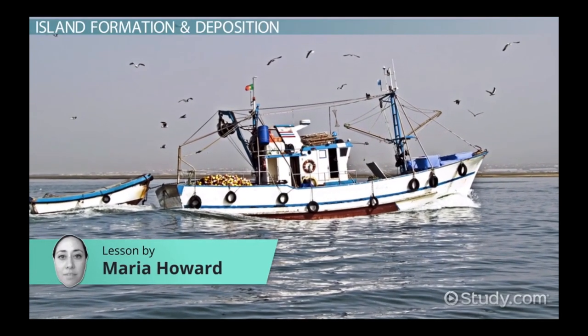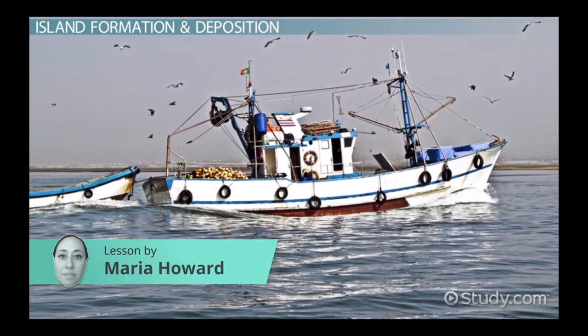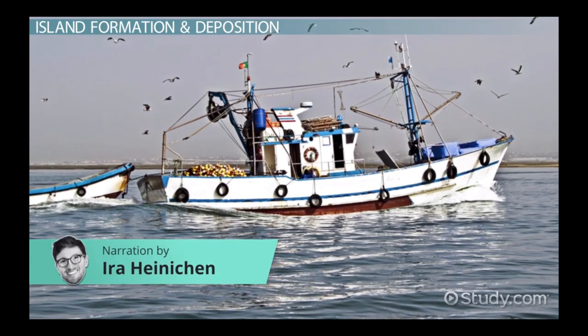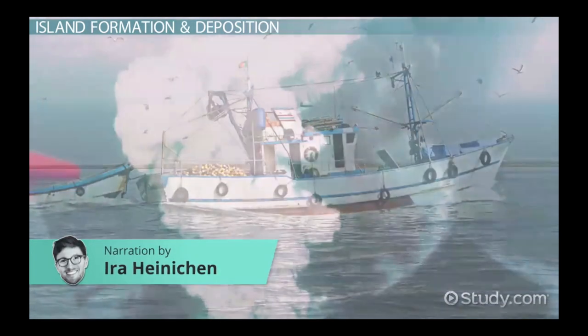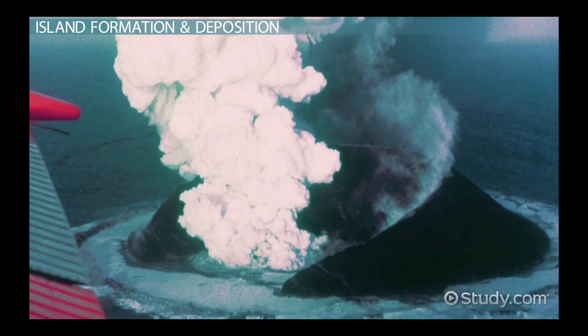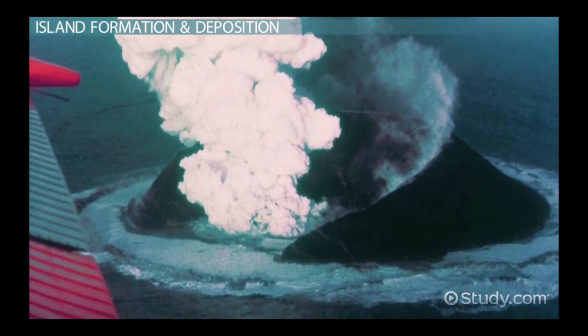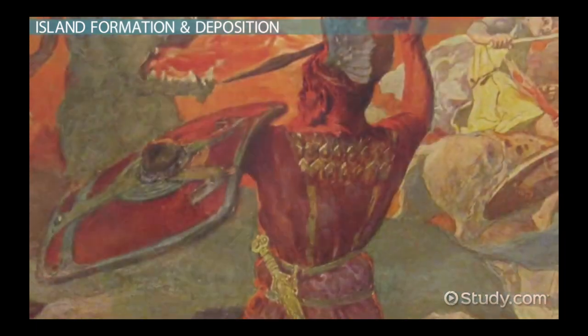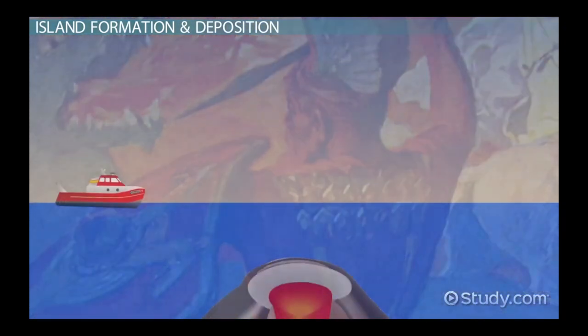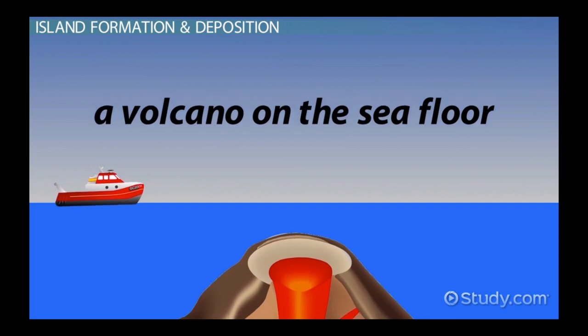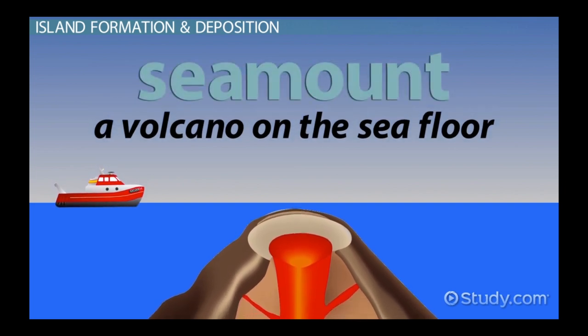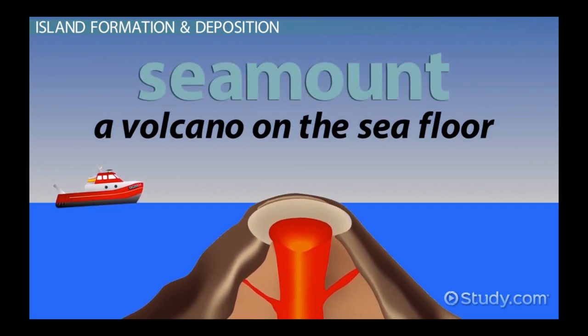On November 14, 1963, fishermen off the southern coast of Iceland noticed a new island had suddenly appeared. The small island was named Surtsey — Icelandic for Surtr's island, after the Norse ruler of fire. Surtsey was formed from a volcano on the seafloor, called a seamount, which had grown so big it broke the surface of the ocean and became an island. Surtsey continued to erupt for over three years and provides a young island for scientists to study new land.